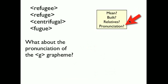Now, there's an important pronunciation question here. When we look at this word refugee and refuge and centrifugal and the other etymologically related word fugue, but not morphologically related, we notice that this G grapheme is representing different pronunciations.